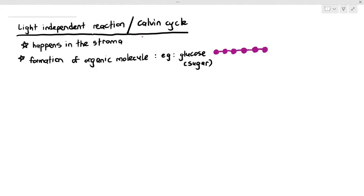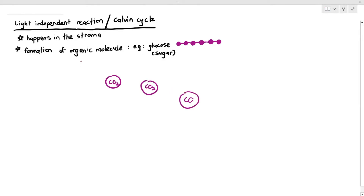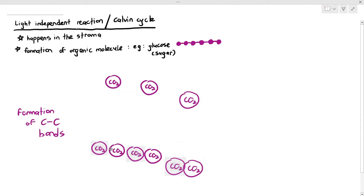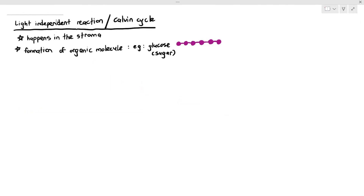Before we begin, here is some background you don't have to memorize. It is impossible for plants to directly join carbon dioxide molecules together because carbon dioxide is extremely stable. If you wanted to join one CO₂ to another to another, the amount of energy required is insurmountable. So plants have evolved to take a slightly more complicated approach to form carbon-carbon bonds.